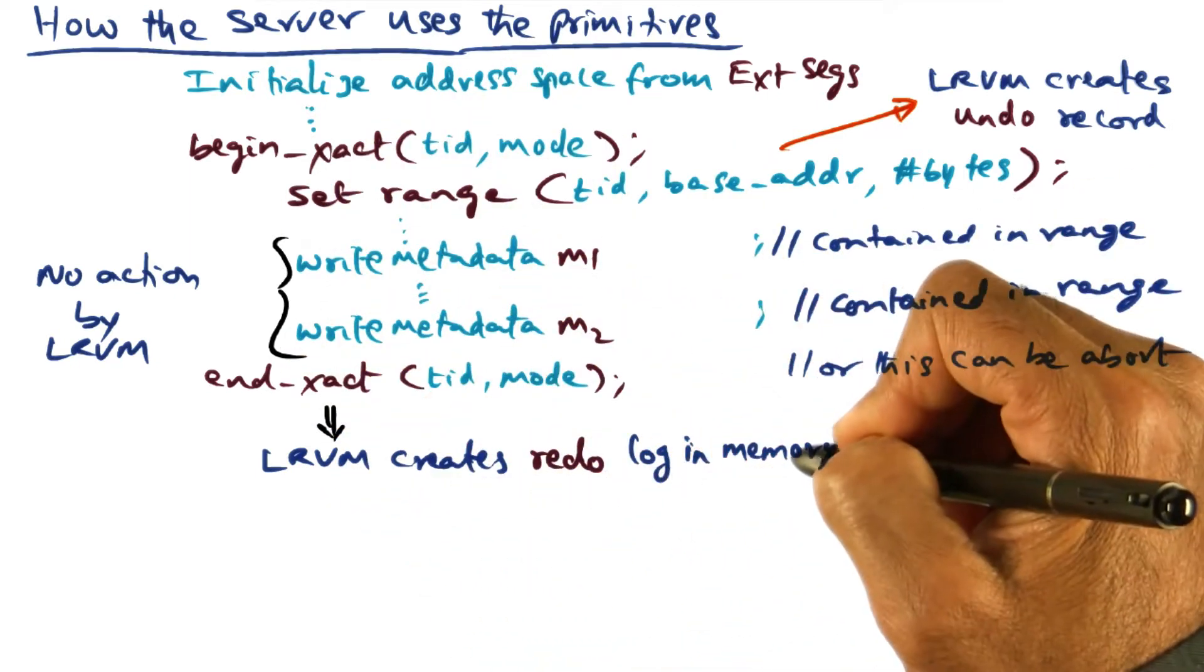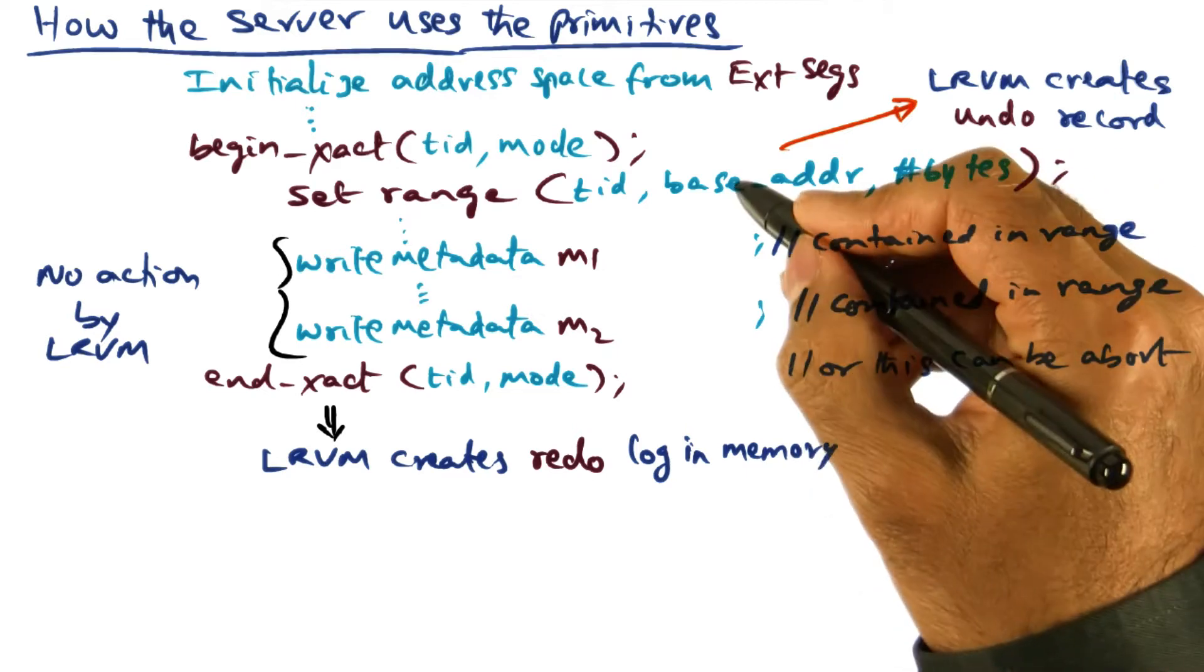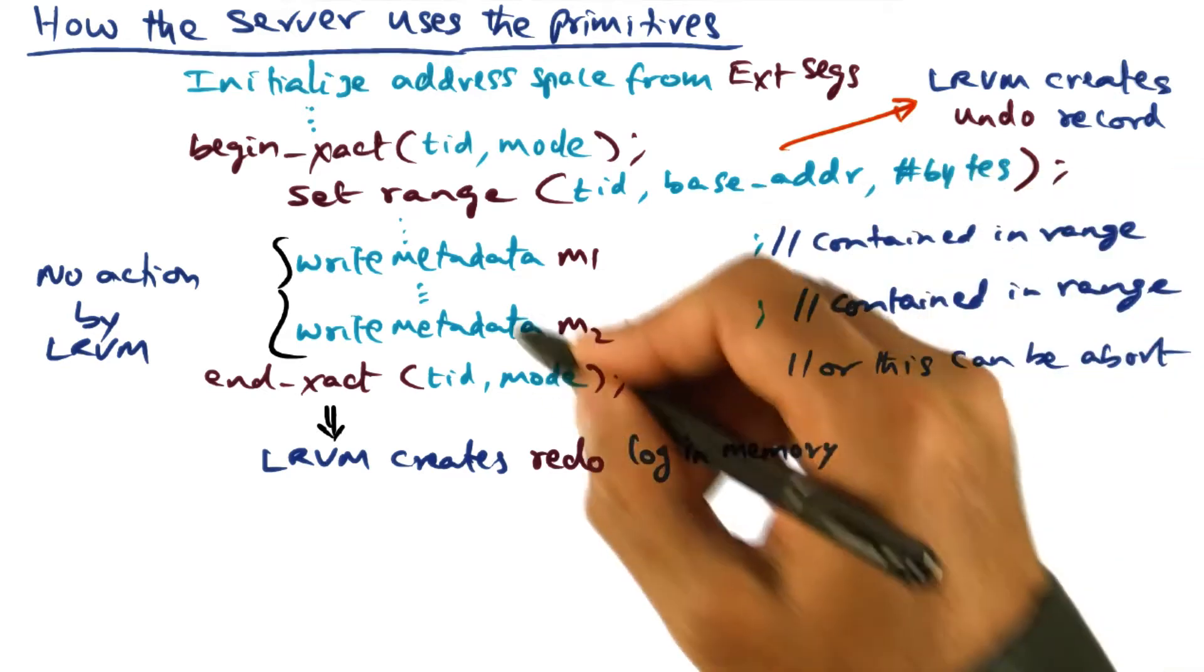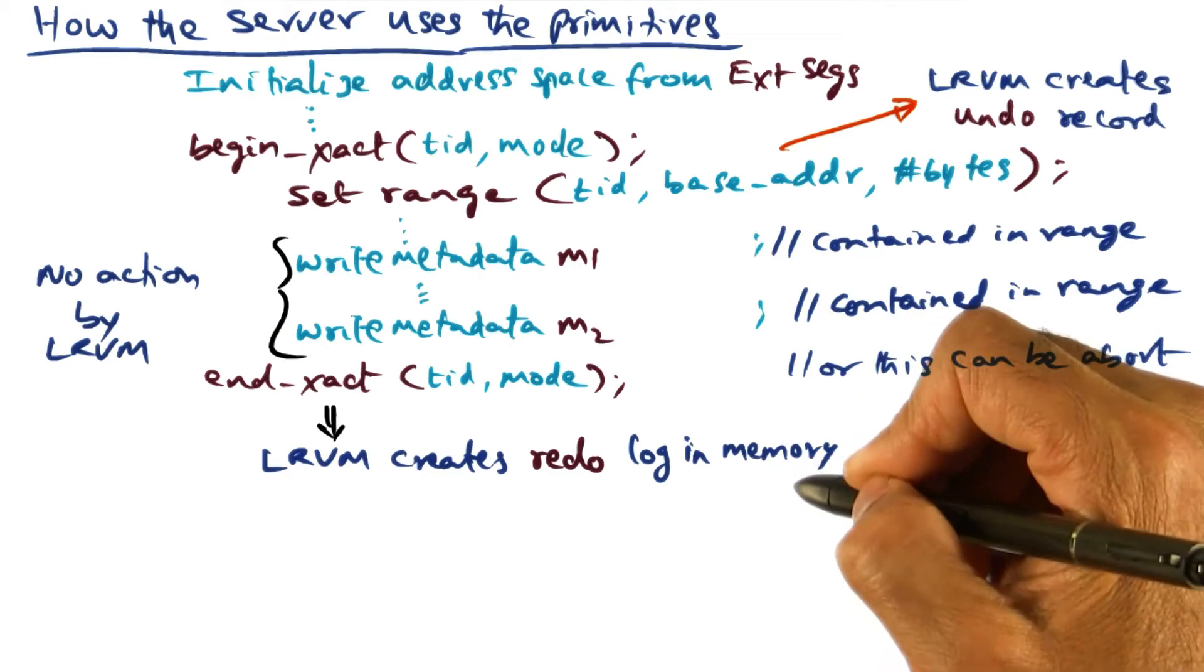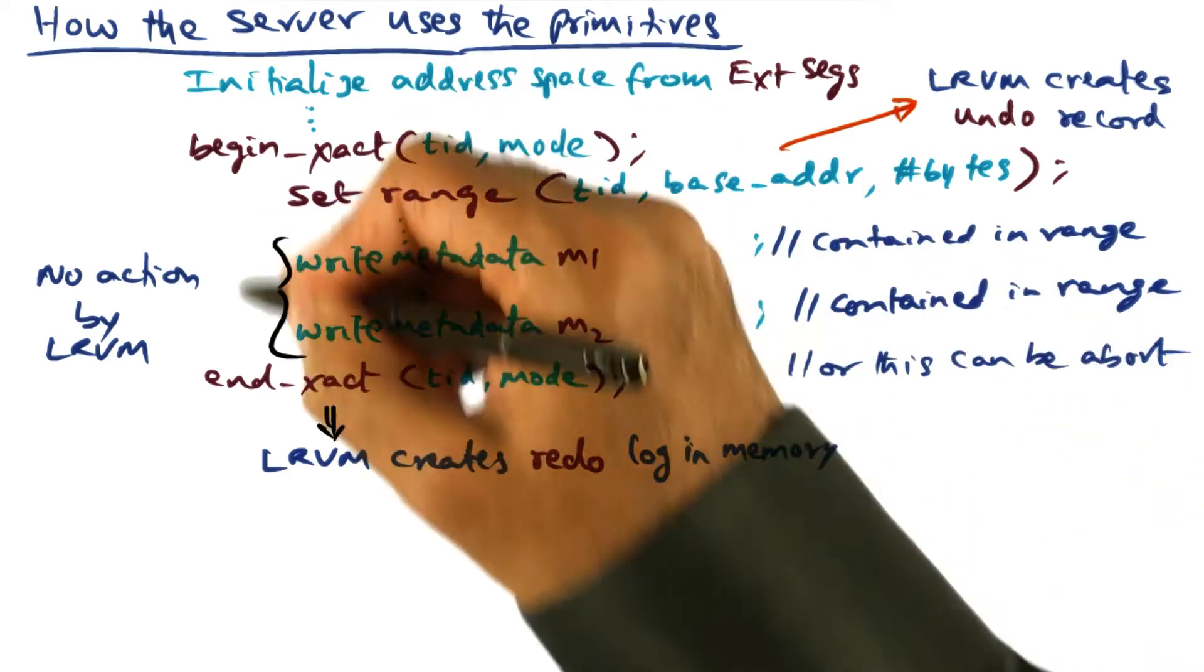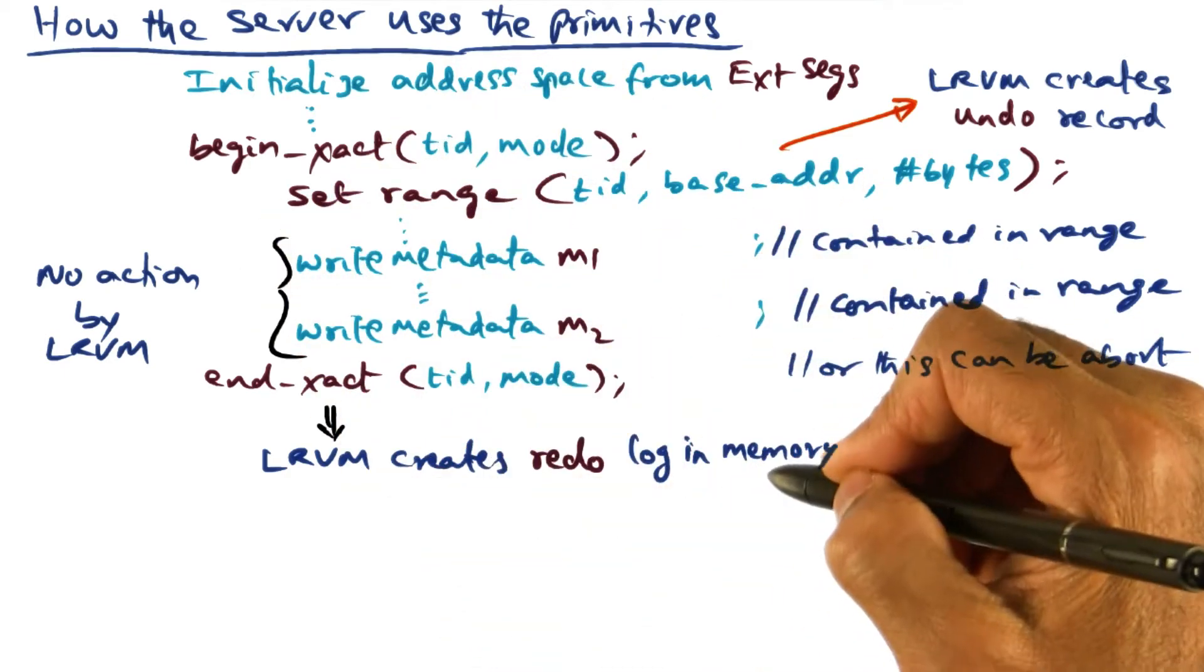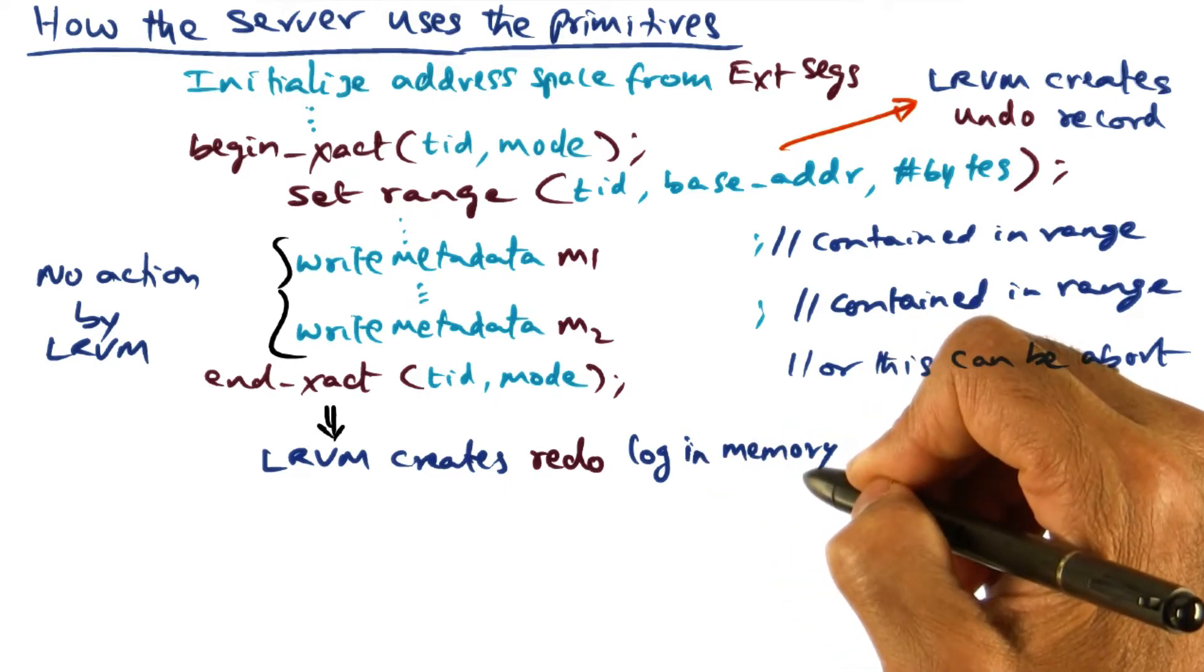So the log record that it writes is basically saying, here is the start address, and here is the number of bytes, and this is the new data that goes into this virtual address space. That's what LRVM is creating as a redo log in memory.